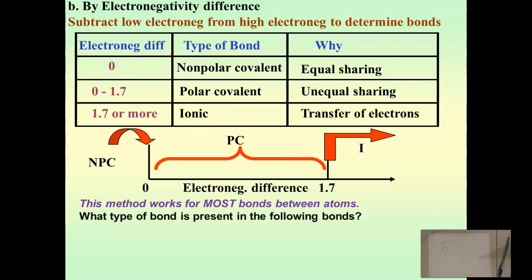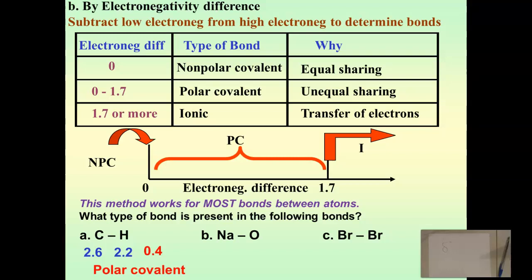Let's do some practice. Between carbon and hydrogen: carbon has an electronegativity of 2.6, hydrogen is 2.2. Subtract those and you get 0.4, which means it is a polar covalent bond with unequal sharing. Between sodium and oxygen: sodium is 0.9 and oxygen is 3.4 — we're finding these electronegativities on Table S. Subtract them and we get 2.5, which is much larger than 1.7, so it's ionic.